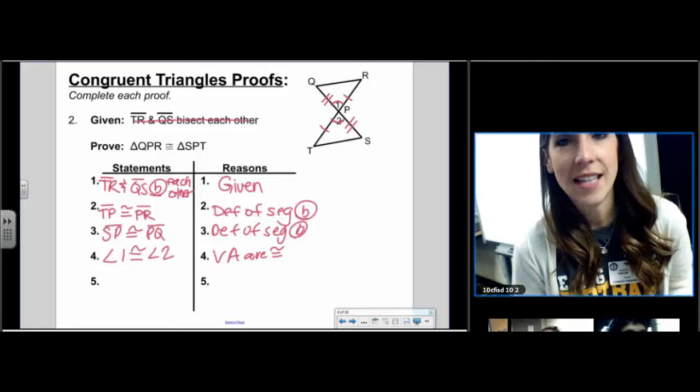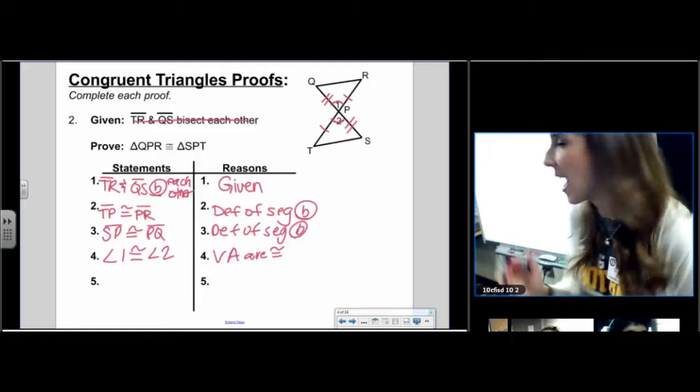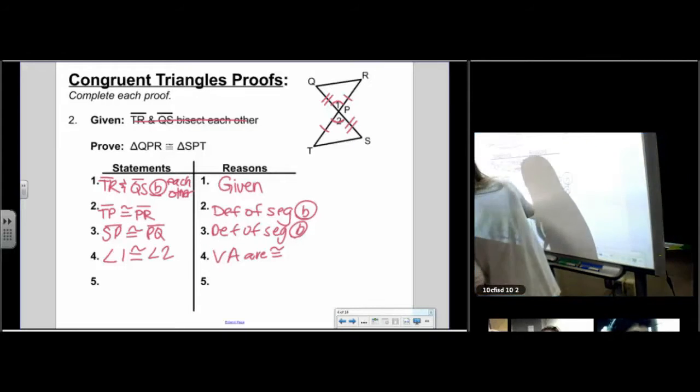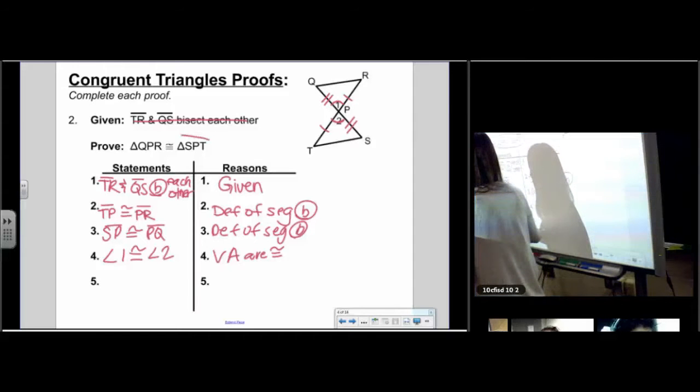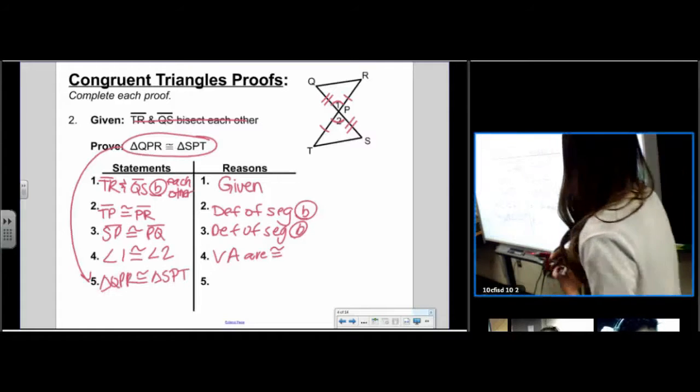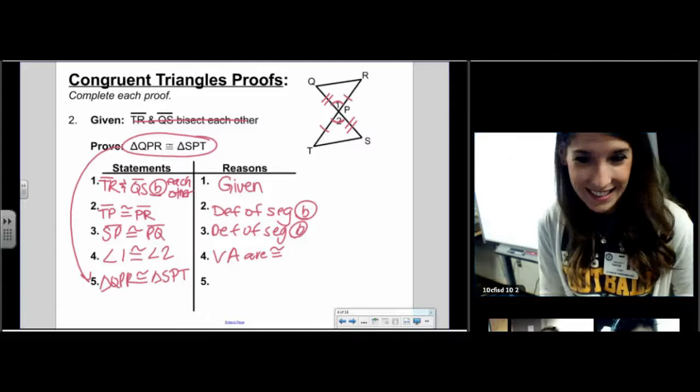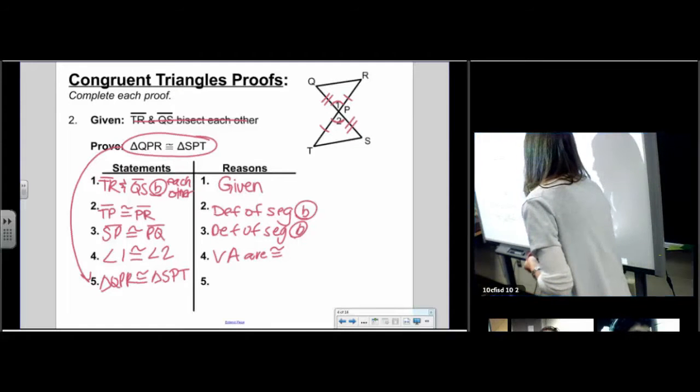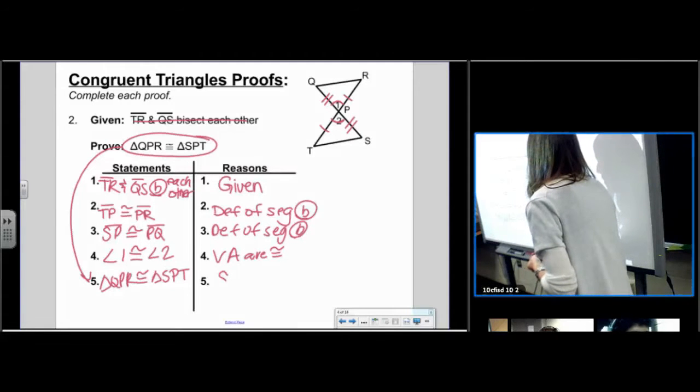Lastly, the last step. There's no guessing here. Every time, the last step is the proof. Triangle QPR is congruent to triangle SPT. And what's the reason? Very good. Y'all have it. Side, angle, side. End of proof.